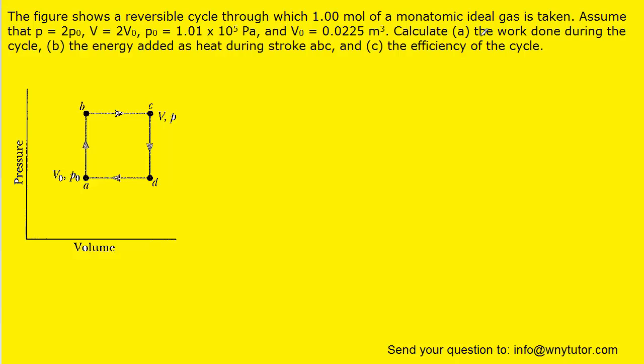For part A of the question, in order to calculate the work done during the cycle, what we have to do is find the area underneath the graph. Remember that for a pressure volume graph, the work is going to equal the area underneath the curve.